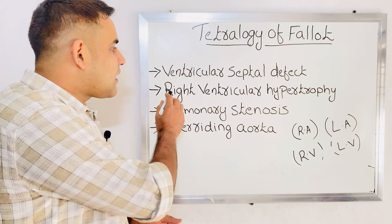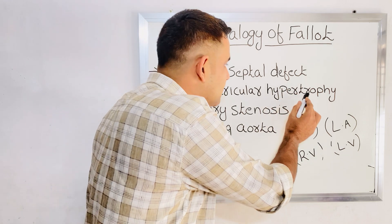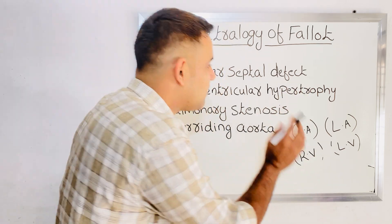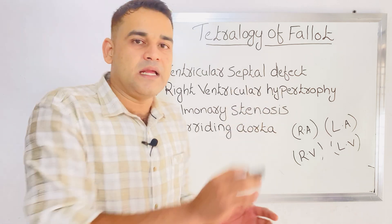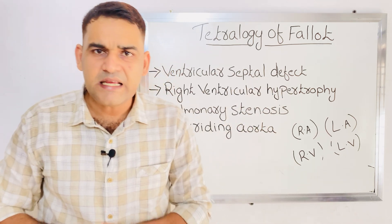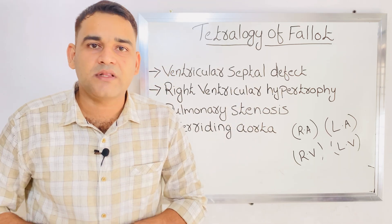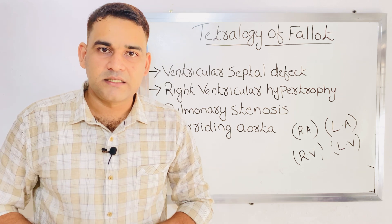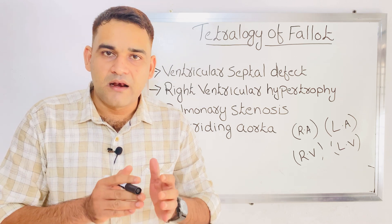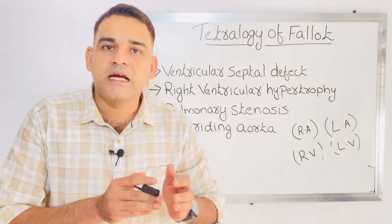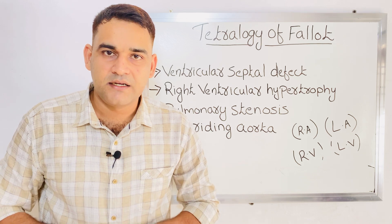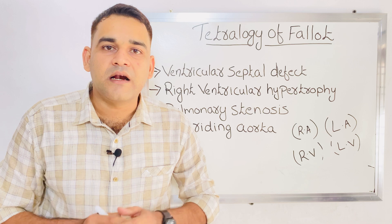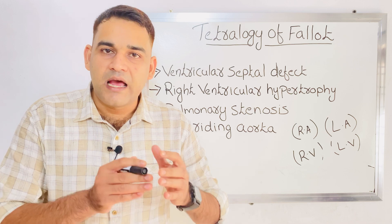The next condition is right ventricular hypertrophy. Here, the problem is in the right ventricle. Hypertrophy means increase in size, so the right ventricle will be enlarged. That is the second condition — right ventricular hypertrophy, enlargement of the right ventricle.